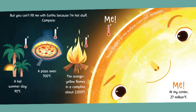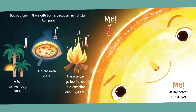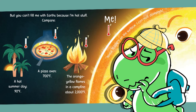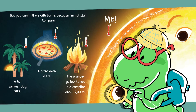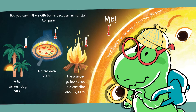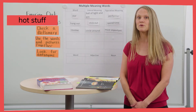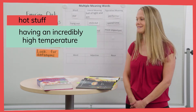It says the sun is hot stuff. This phrase has two meanings. The literal meaning is easier to find. We can use the words and pictures together to see that the sun is much hotter than a summer day, a pizza oven, and a fire. So hot stuff literally means having an incredibly high temperature.